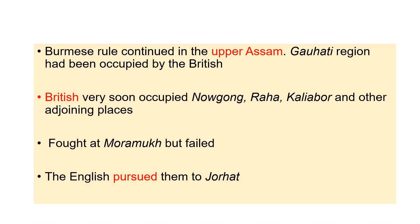The British forces had occupied the Guwahati region, that is Lower Assam, while the Burmese continued their rule in Upper Assam. To drive them away, the English forces advanced towards Jorhat and consequently occupied Nagaon, Raha, Kaliabor, and other adjoining places towards Upper Assam.